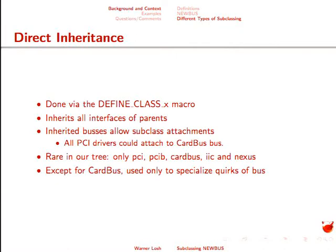Just like public inheritance in C++, for methods it inherits all the interface of the parents, allowing you to override them if you desire or keep the parent's implementation the same. Generally in our tree it's only used to deal with particular quirks of different platforms or PCI bridges. It's not really used in our tree to any great extent. CardBus is the one big exception where we add a lot of code that isn't at all relevant to PCI, but is very relevant to CardBus.